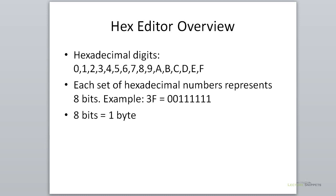Each set of hexadecimal numbers represents 8 bits. For example, you might see 3F together, and that actually represents 8 ones and zeros. We need to convert that hexadecimal number over to binary, which gives us 2 zeros and then 6 ones — a total of 8 bits, also known as 1 byte. In the next video, I'll use a calculator to show you how to do the conversion between hexadecimal, decimal, and binary formats.